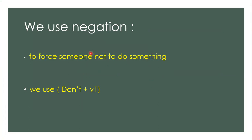We use negation to form a sentence to force someone not to do something. So I want to use 'don't.' We use don't plus verb 1 — for example: don't close, don't speak, don't play.